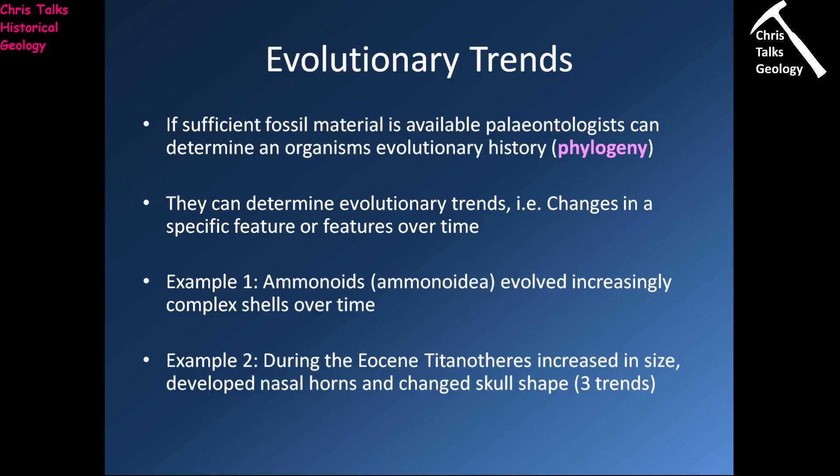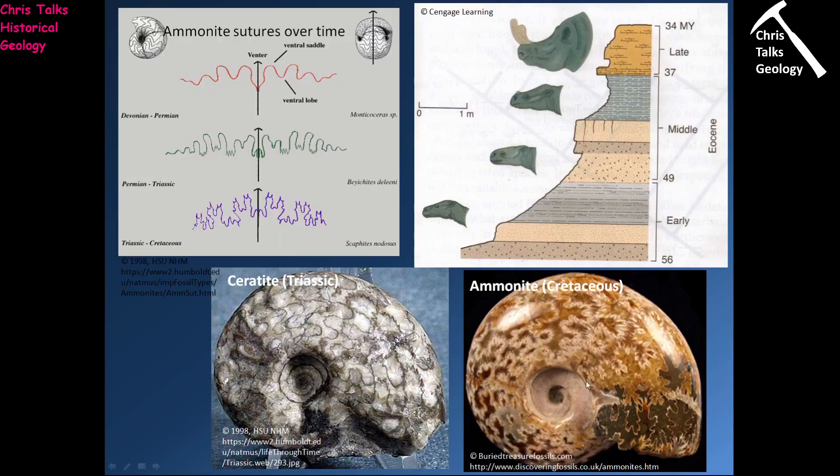Some examples of this are the group ammonoids, which is part of the subclass of cephalopods called Ammonoidea. What we see in the fossil record is that they evolve increasingly complex shells over time. Another example would be the titanotheres of the Eocene — this particular species begins to increase in size and develops nasal horns, and there's a change in skull shape over time as well. We can see this because in both instances we have a really good fossil record.